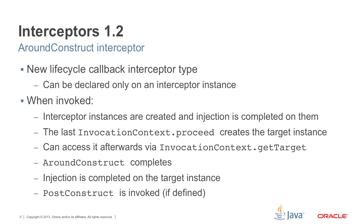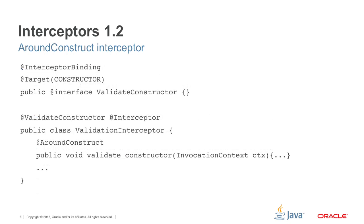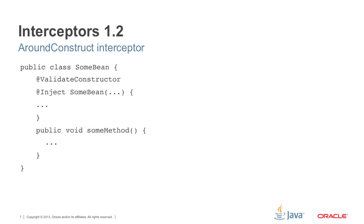If post construct is defined for the target instance, post construct will also be invoked after all previous steps are done. We also have an example of targeting a type constructor for interceptors with interceptor bindings. The constructor defines an around construct method called validate constructor that will be called when an instance is being created. If a bean has an inject constructor, the validate constructor will be called when the instance is created.